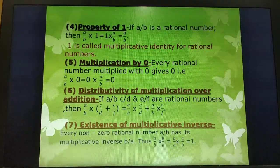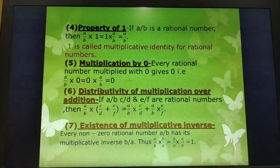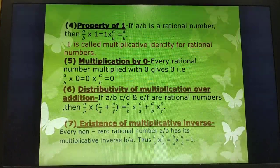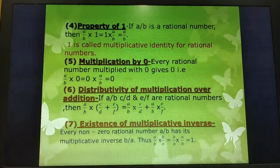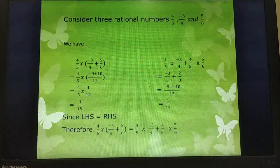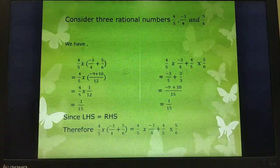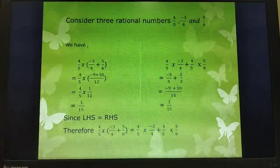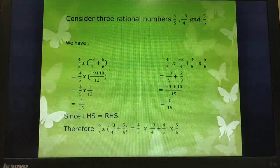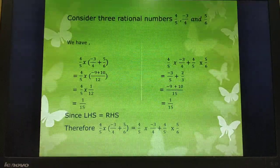Seventh is the existence of multiplicative inverse: every non-zero rational number A/B has its multiplicative inverse B/A, also known as its reciprocal. Thus A/B × B/A = B/A × A/B = 1. Consider an example with three rational numbers 4/5, -3/4 and 5/6. As you see, on both the left-hand side and right-hand side, the result is 1/15, confirming that the distributivity of multiplication over addition exists.